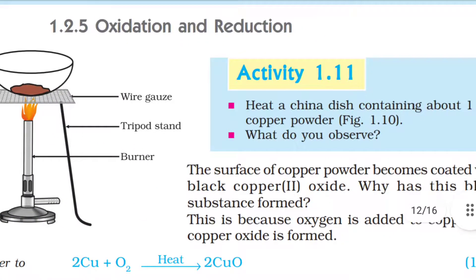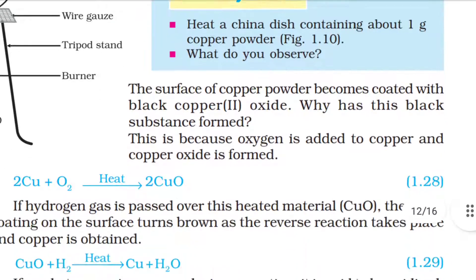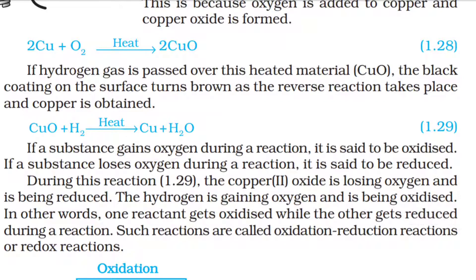1.2.5 Oxidation and Reduction — Activity 1.11: Heat a china dish containing about 1 gram of copper powder. The surface of copper powder becomes coated with black copper oxide. This is because oxygen is added to copper and copper oxide is formed. Equation: 2Cu + O₂ → 2CuO. If hydrogen gas is passed over this heated CuO, the black coating on the surface turns brown as the reverse reaction takes place and copper is obtained.